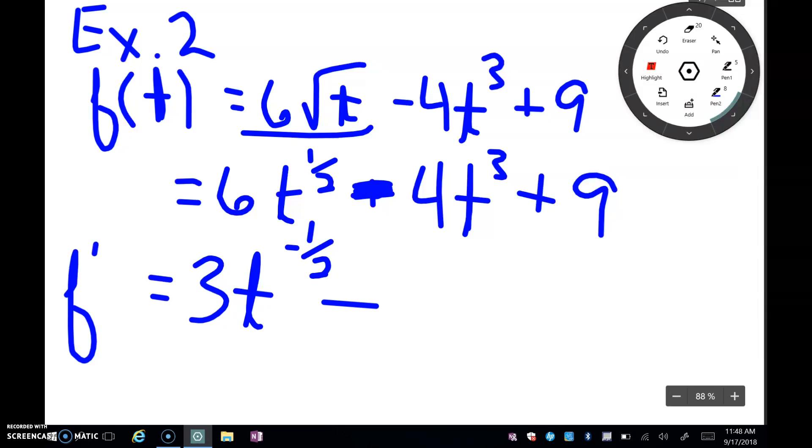And for 4t to the third, bring the power down. So 4 times 3 is 12. Take 1 off of the power. And remember, if it's a standalone constant, that derivative is 0. So my final answer is 3t^(-1/2) - 12t^2.